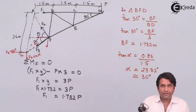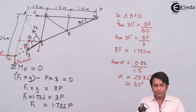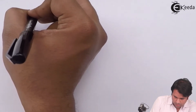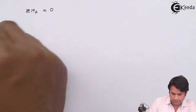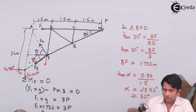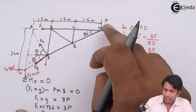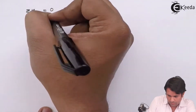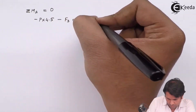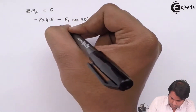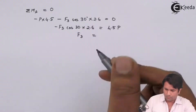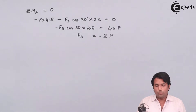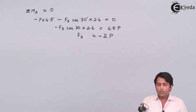I will move on to joint FA and take moment about joint A. Taking moment about joint A, I get the value: F3 comes out as minus 2P.